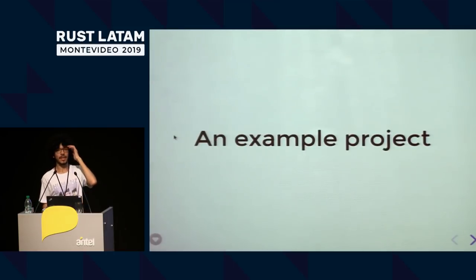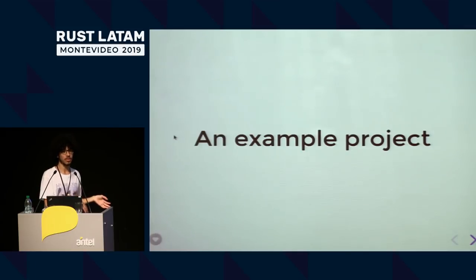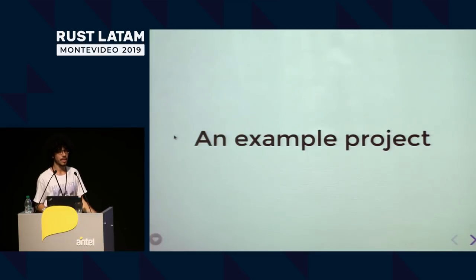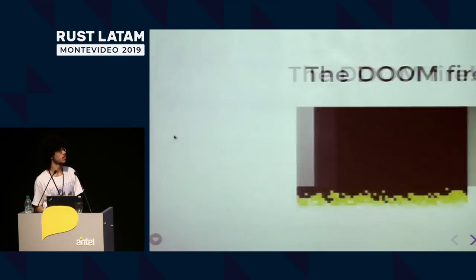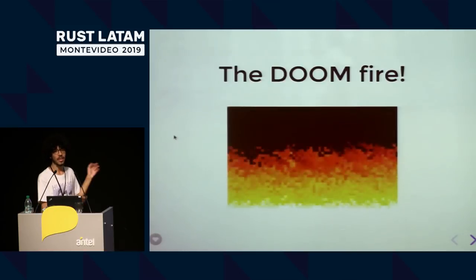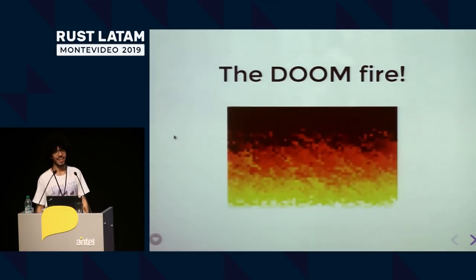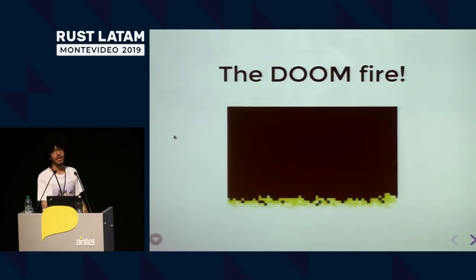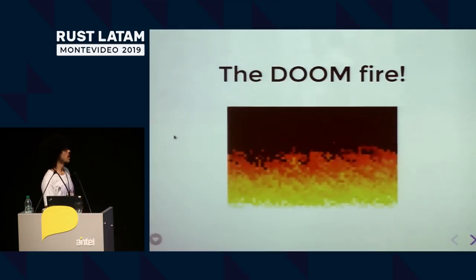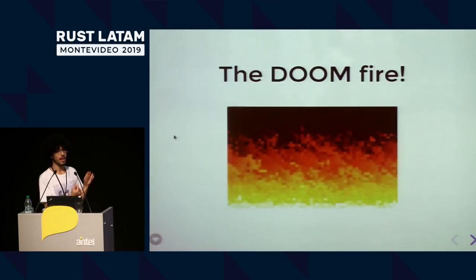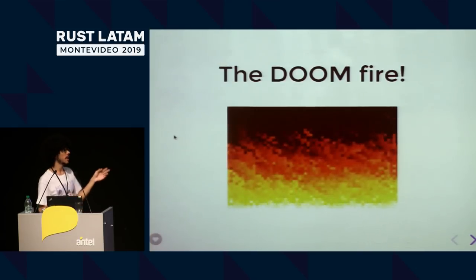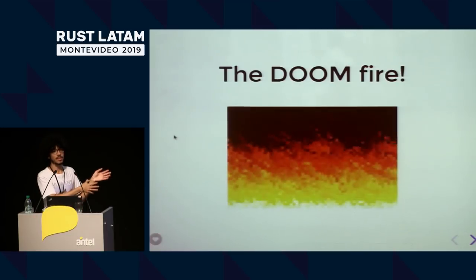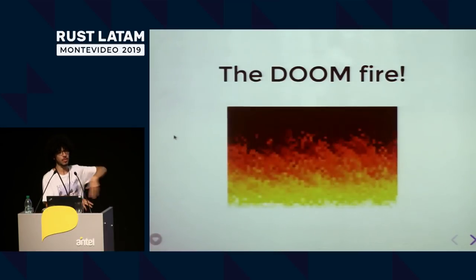Our project has to be closed-source because of legal limitations. However, I did a project just for today, which is about Doom Fire. I don't know if you've played Doom — it's a game. There's this fire on the menu screen, and I basically made iOS, Android, and a web app that renders this on screen. The logic for doing this is in Rust, while the rendering part is in the platform-specific app.